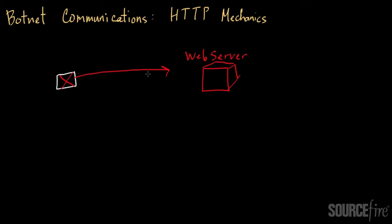Once a system is infected — a client gets infected with some type of bot software — that bot is going to register with the CNC server. That registration happens over the HTTP protocol as an effective web request, letting the server know it's there and available. You can use either a pull or a push-based method to communicate with the bot.